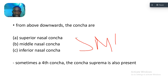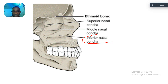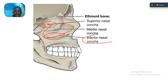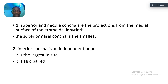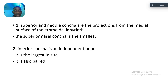Let's locate each of these. The superior nasal concha is mostly inside, so it may not be clearly visible. Here is the middle nasal concha, and this is the inferior nasal concha. The superior and middle conchae are projections from the medial surface of the ethmoidal labyrinth, and the superior nasal concha is the smallest — you can see how small it is. The inferior nasal concha is an independent bone, is the largest in size, and is also paired.